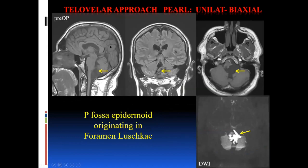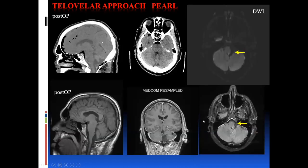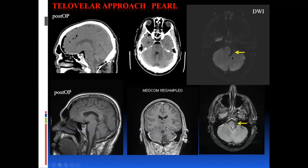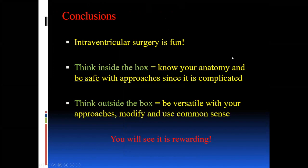The last case: a telovelar approach for unilateral extraaxial disease. A hypointense tumor occupying the fourth ventricle but also splaying the foramen of Luschka and wrapping around the brainstem. On DWI this was an epidermoid with a star-shaped configuration distorting the tissue. Using a standard approach and following each crevice around the brainstem, post-op DWI showed complete resection and no stroke — very suitable for this type of disease when you get your viewing angles right.